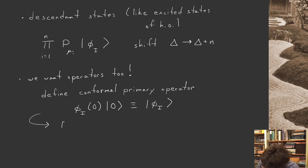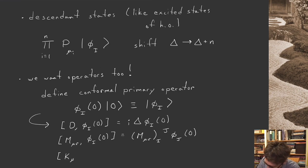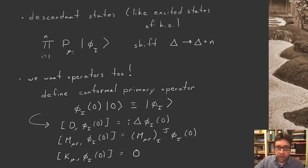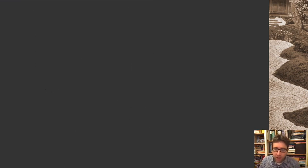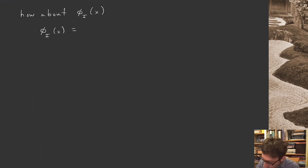Given how the algebra acts on the states, we can deduce how it must act on the operators themselves — through commutation relations. We'll have [D, phi_i(0)] = i*delta * phi_i(0). For Lorentz generators acting on a conformal primary we get the corresponding representation matrix acting on the index. The special conformal generators commute with this operator at the origin. You pass from the direct action of the generator on the state to a commutator action on the operators. The origin is a special choice, and it'd be nice to know how these generators act on a primary field at arbitrary position.